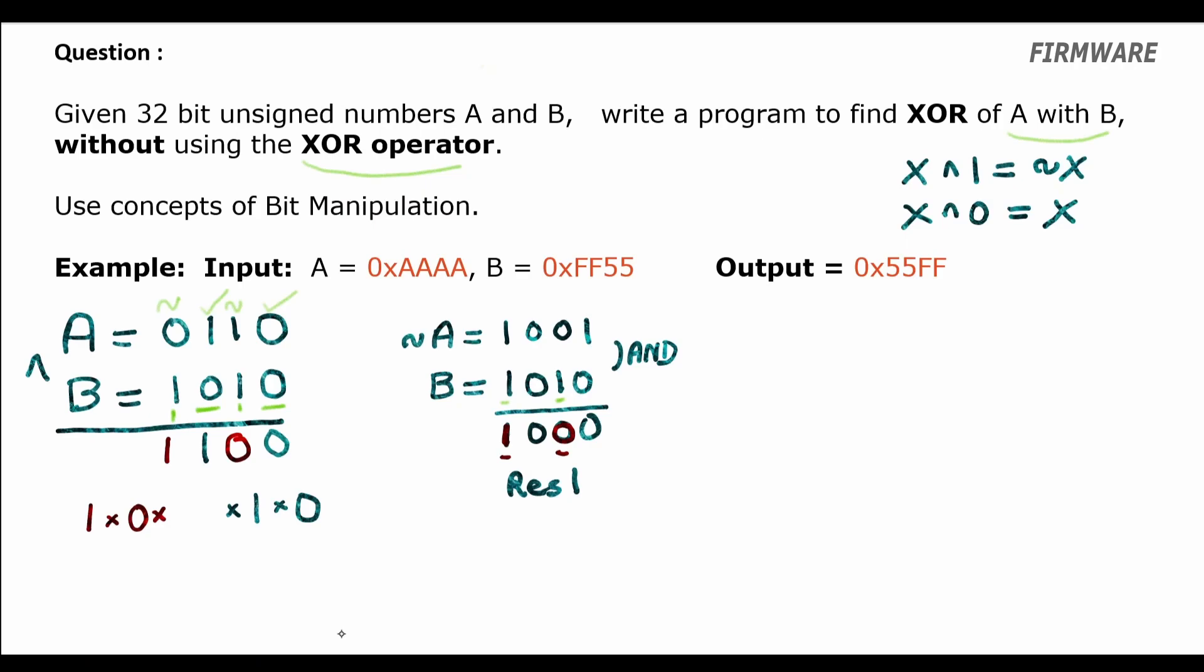To extract those bits we need to have a mask which has ones in those positions and zeros in the remaining positions. That mask for us would be, can you think? It is inverted B, right. Inverted B is 0101. So we can extract the LSB and third bit in A by doing A AND inverted B.